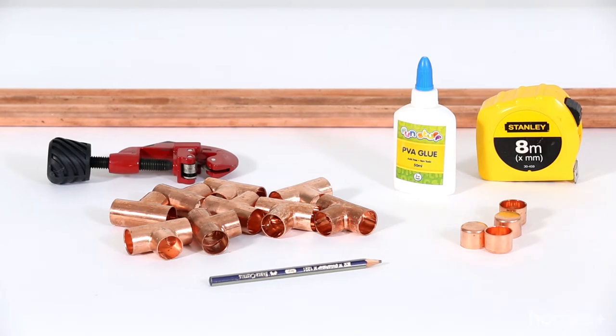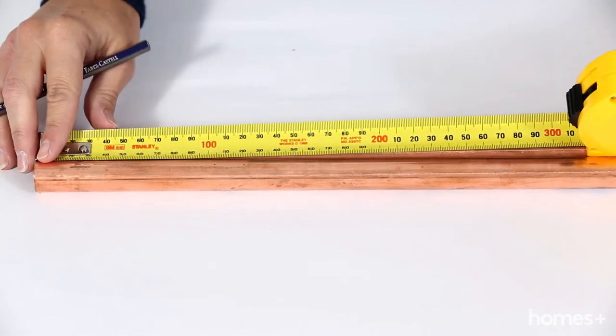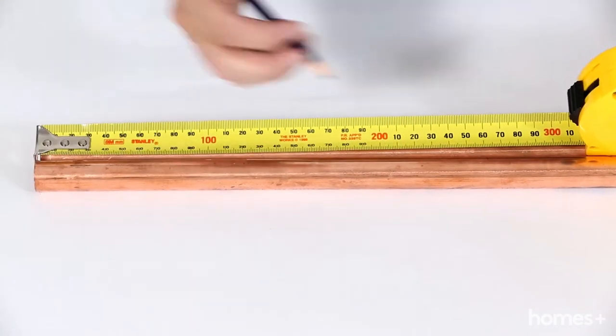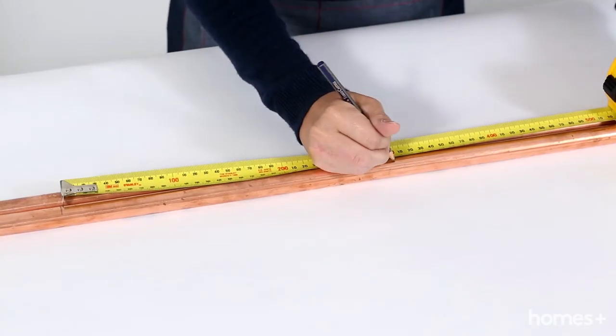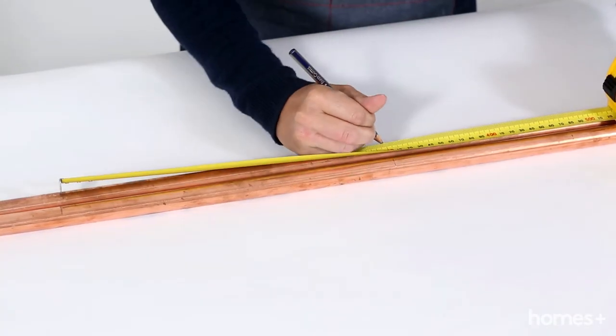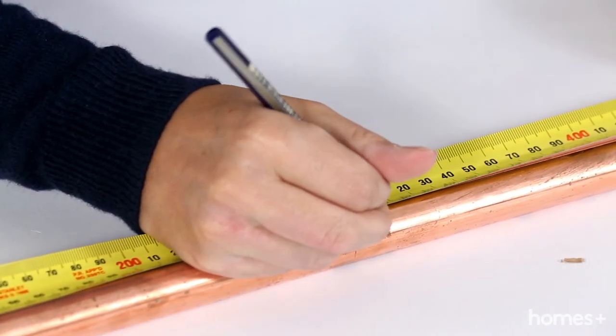You'll also need a pipe cutter and PVA glue. Place two lengths of copper and mark out 25 centimeters from the ends. From these 25 centimeter marks measure an additional 30 centimeters. Now from the 30 centimeter mark measure another 30 centimeters.